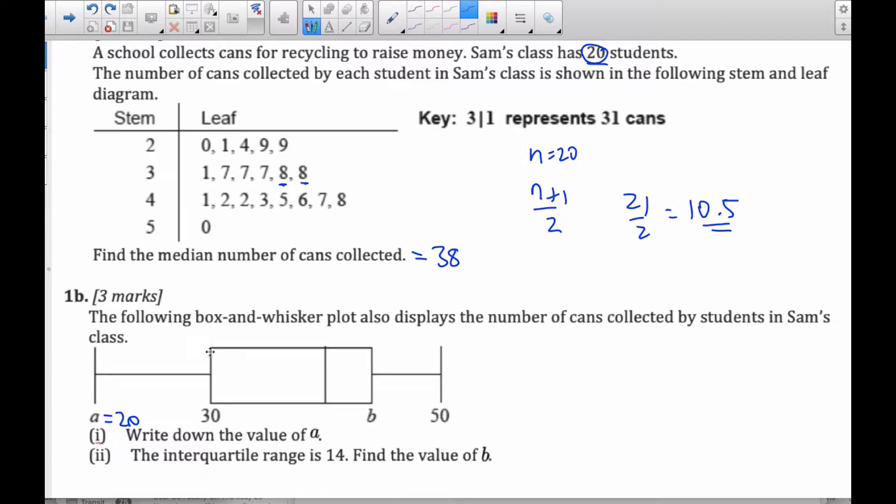That's the value of A. The interquartile range is 14, so that means the distance from here to here is 14 units. So if this is 30, this here is plus 14, 44. And so just for fun, this is the median, so that is also 38.